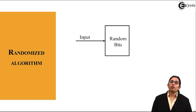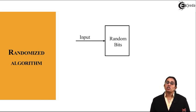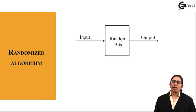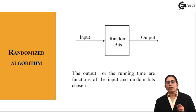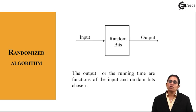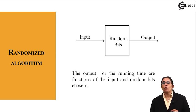So that gets added to your input and changes the nature or the required output. So it is defined as the output or the running time are functions of input with the random bit chosen.